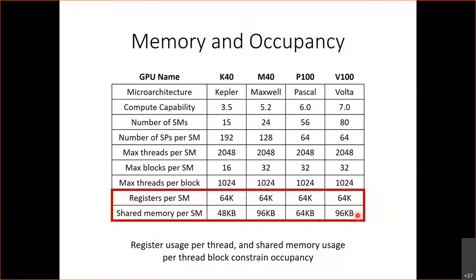Another student asked about memory leaks when an application crashes. You can think of it just like CPU memory: if an application crashes, the operating system deallocates all memory allocated by that application. Similarly, if a process crashes, all GPU memory it had allocated will be deallocated — so no memory leaks from a crash. Obviously you do have to worry about memory leaks if you allocate and forget to deallocate while the application is still running, but if the application stops running, everything it had allocated will be freed.